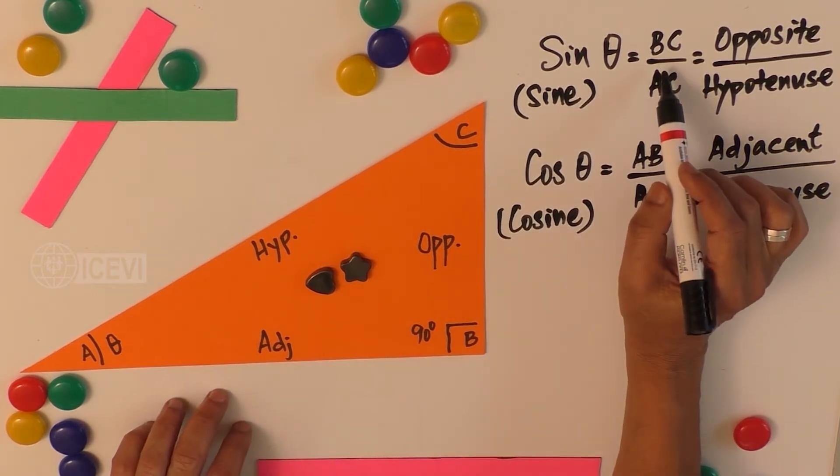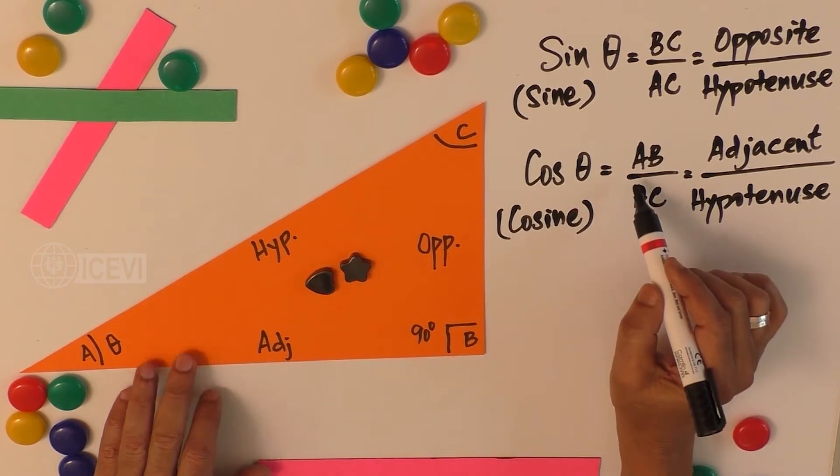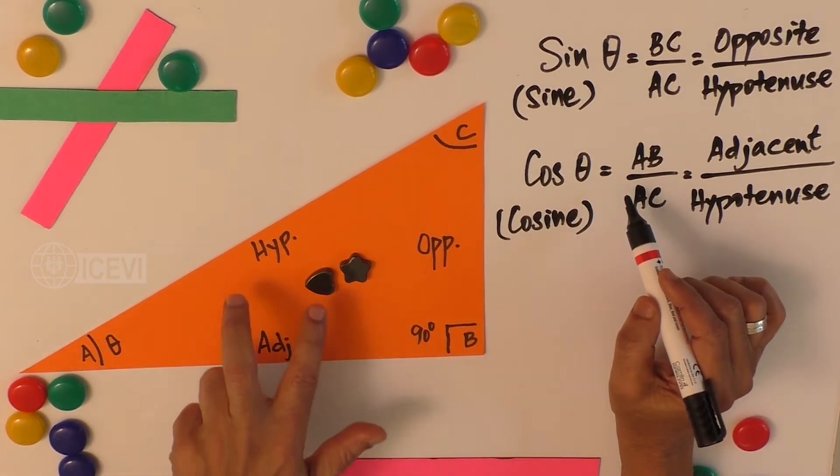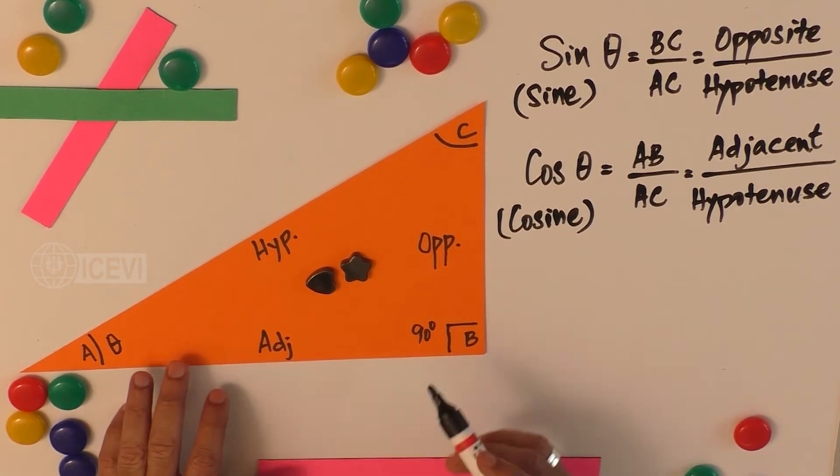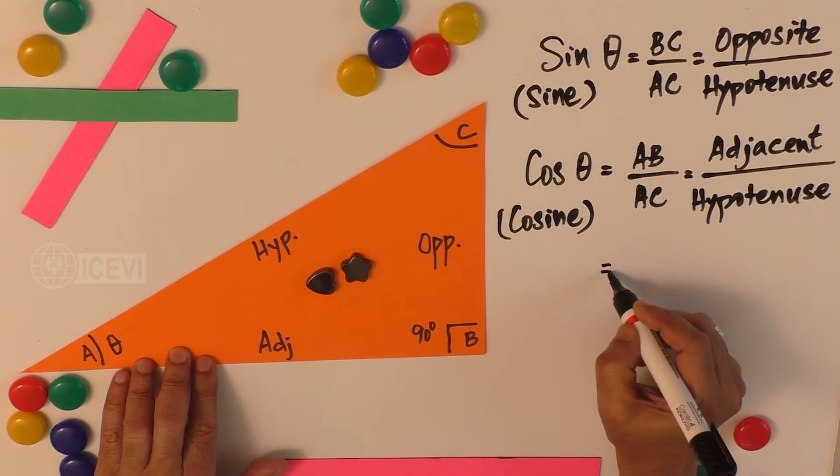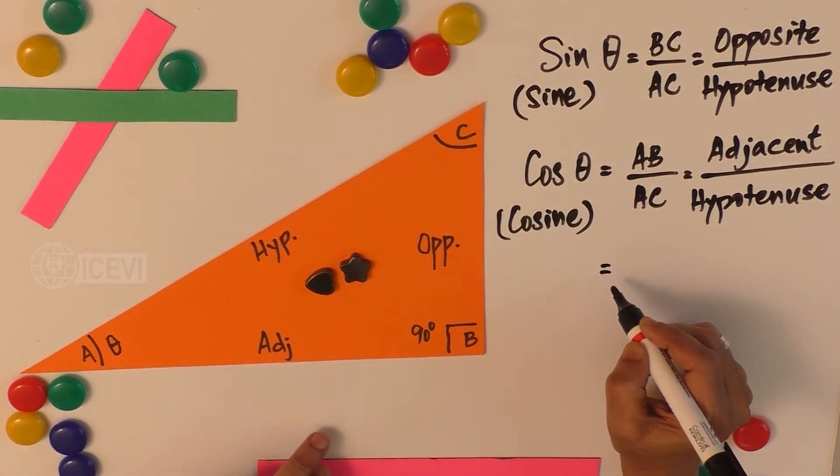Now we have considered the combination BC by AC, we have considered the combination AB by AC. Now one combination which is left is AB compared to BC.